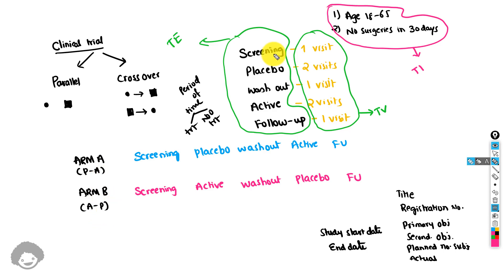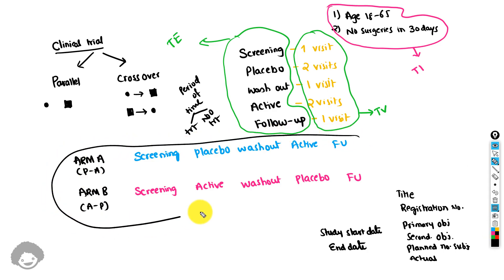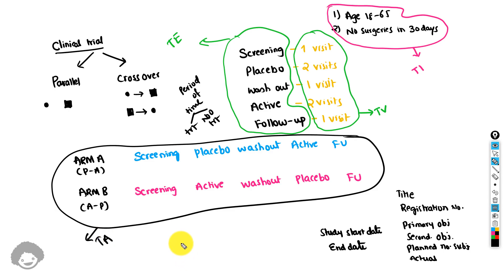There is a fixed set of time periods where subjects may be taking placebo, active, and other non-treatment elements, but the order of these elements differs between arms. This order of elements for each arm would be stored in a dataset called TA, which stands for trial arms.